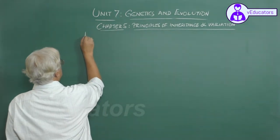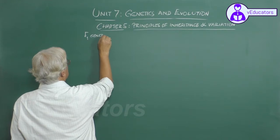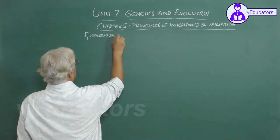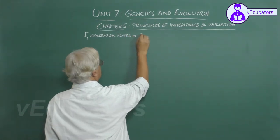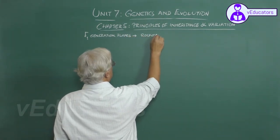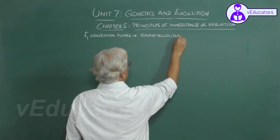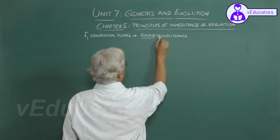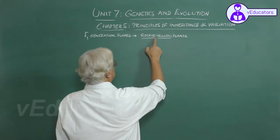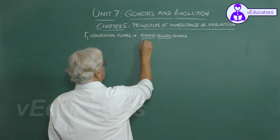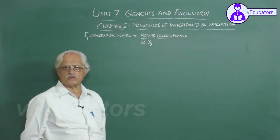In the F1 generation, Mendel obtained round yellow plants. All the plants were round yellow, which means round seed coat and yellow coloured cotyledon. This was the phenotype and the genotype was capital R, small r, capital Y, small y.